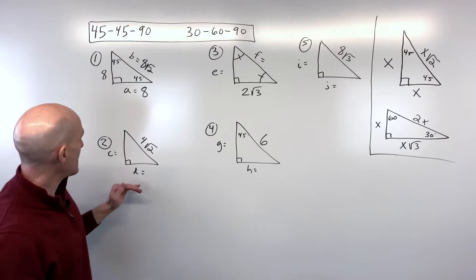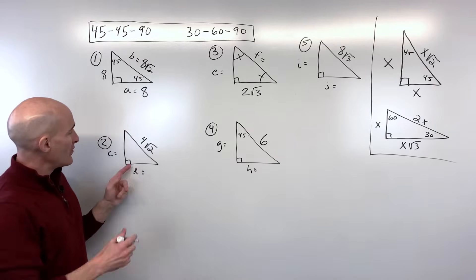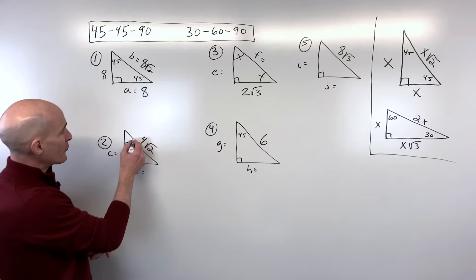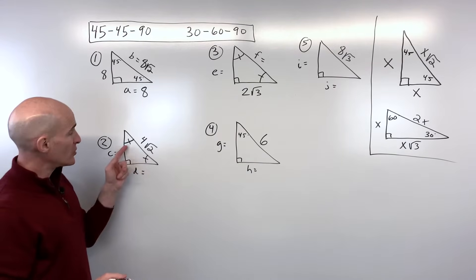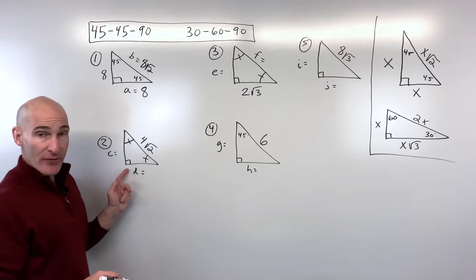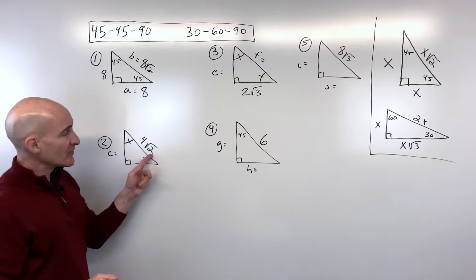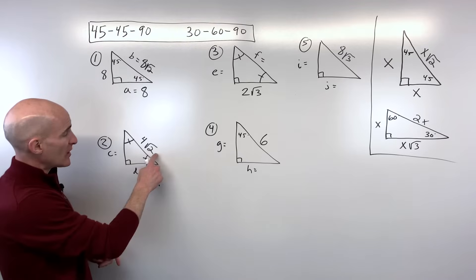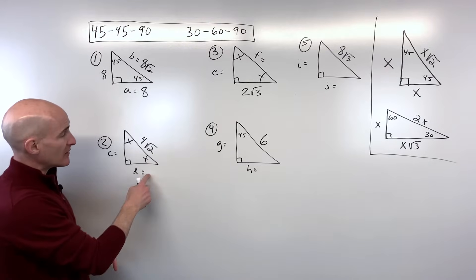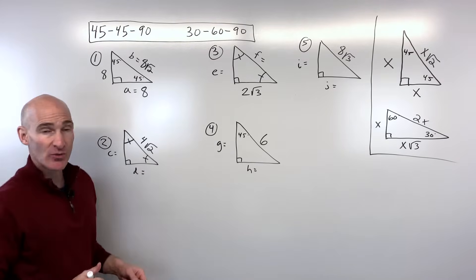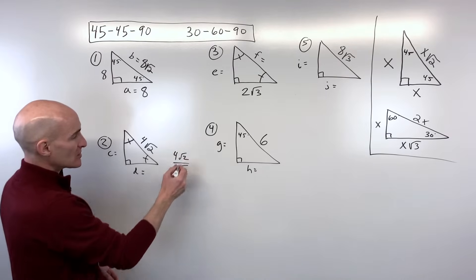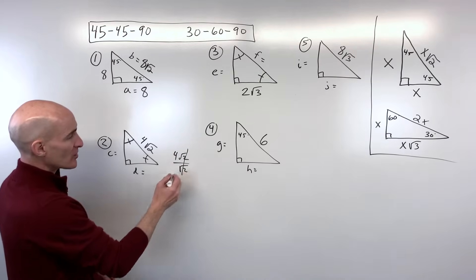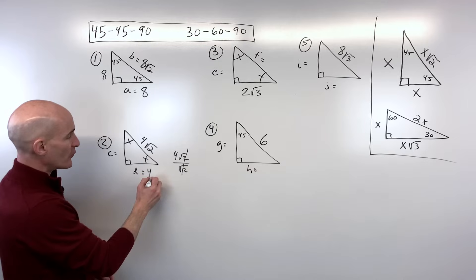For number two, we've got a 45-45-90 — sometimes they'll denote that by showing the two acute angles are congruent. Here they're giving us the hypotenuse. To get back to the leg, we divide by the square root of 2. If we take 4√2 divided by √2, those square root of 2s cancel out and we're left with 4. Remember, in a 45-45-90 the two legs are congruent.